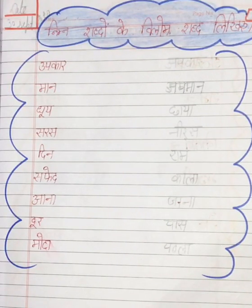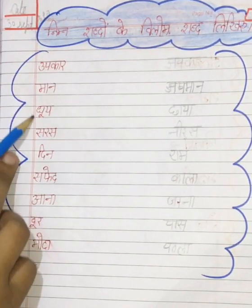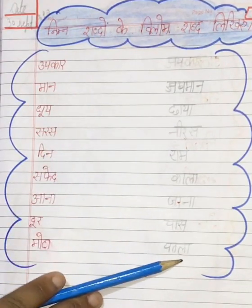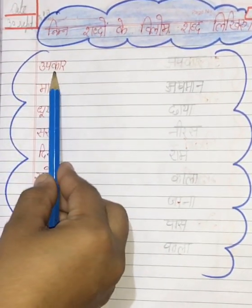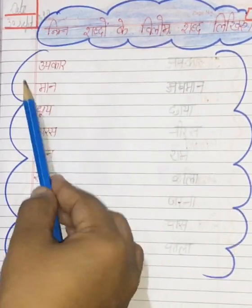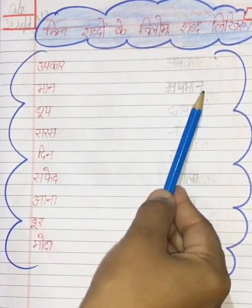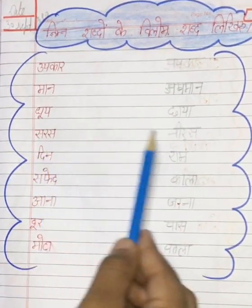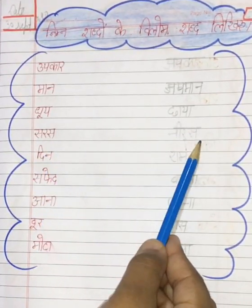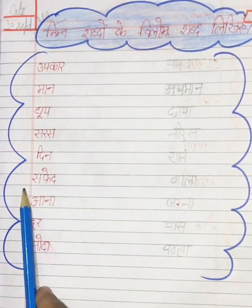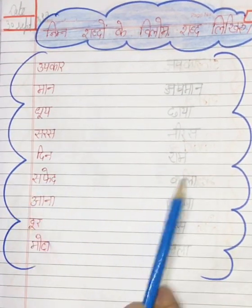आपको विलोम शब्द लिखने हैं। आपको बहुत सारे शब्द दिए गए हैं, इनके आपको विलोम शब्द बनाने हैं। जैसे — उपकार का विलोम अपकार। मान का विलोम अपमान। धूप का विलोम छाया। सरस का विलोम निरस। दिन का विलोम रात। सफेद का विलोम काला।